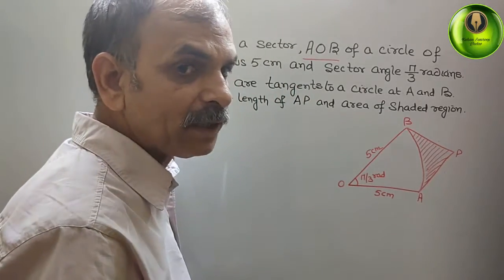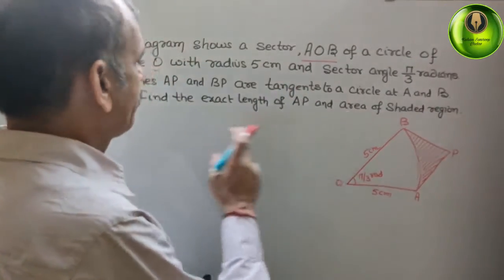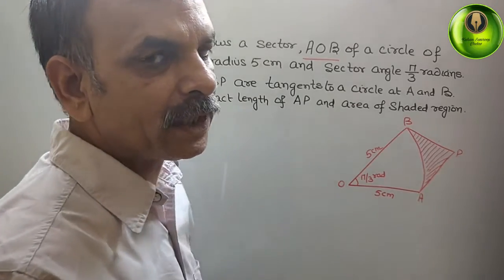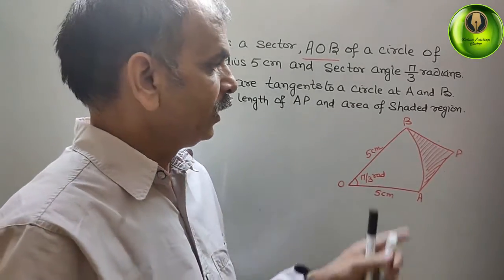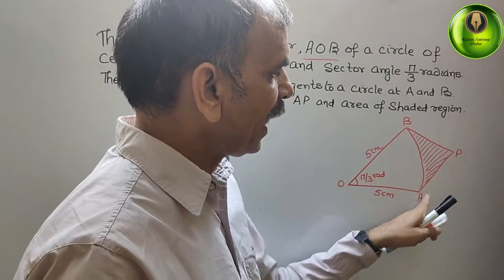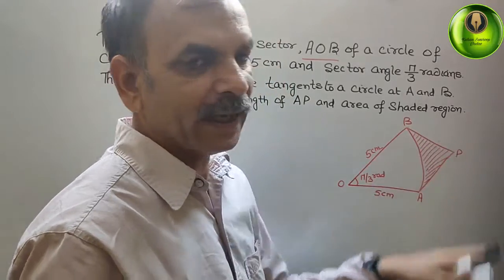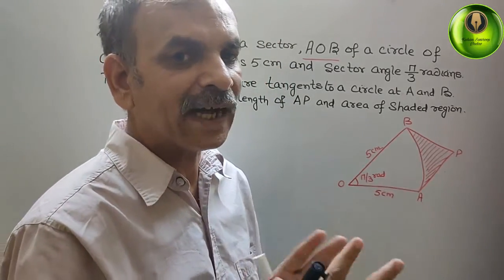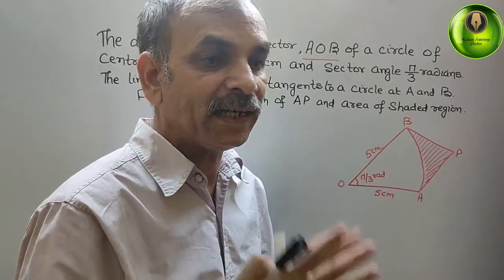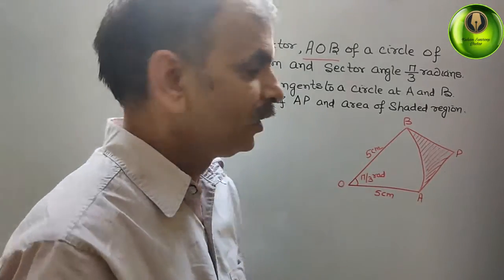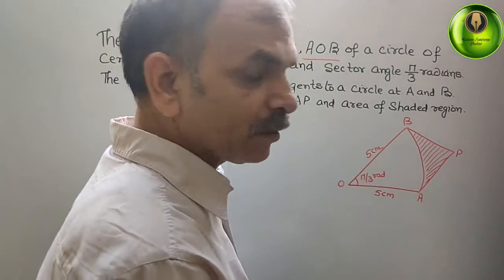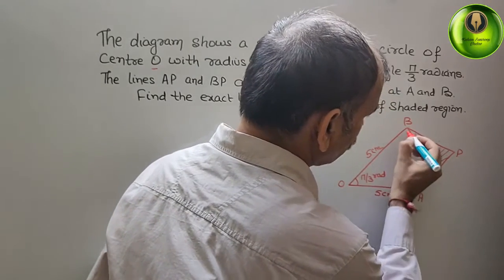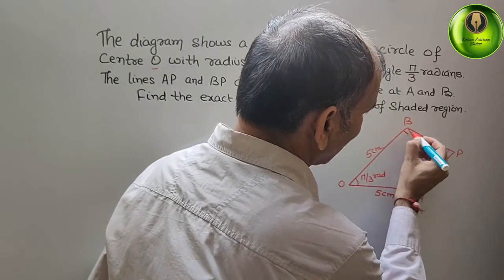If AP and BP are tangents, what does that mean? It means each tangent forms a 90° angle with the radius. So here we have 90° at A, and also 90° at B.